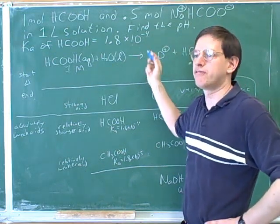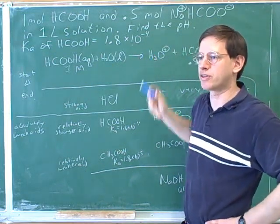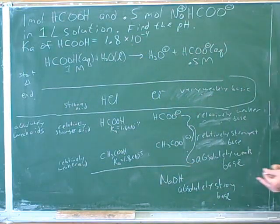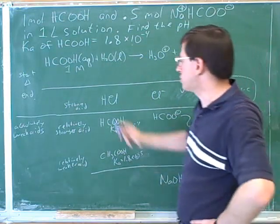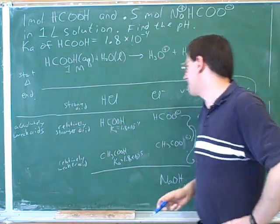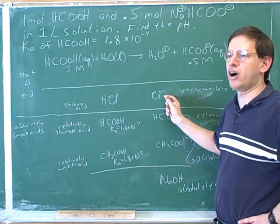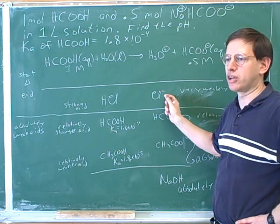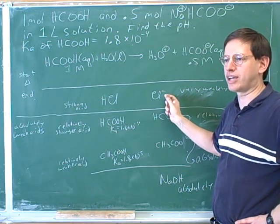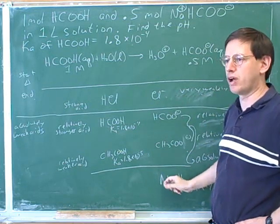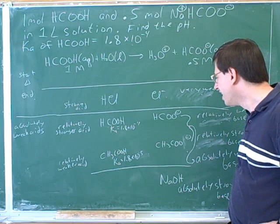Otherwise, this reaction couldn't go to equilibrium — it would have to go to completion either in the forward or the reverse direction. That also explains why absolutely strong acids have to have conjugates that aren't really reactive at all, so the reaction can go all the way in one direction. And the same thing applies for an absolutely strong base.